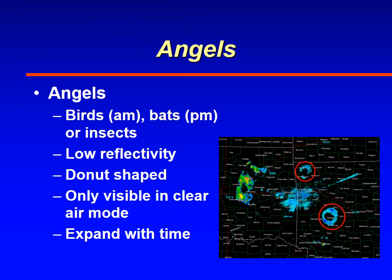Angels are a little different — these are circular echoes caused by birds and bats or insects. Bats happen at night, birds happen in the morning. You may also see them along a front where air converges and birds and bats take flight. These are usually low reflectivity and show as blue donut shapes. You'll only see angels in clear air mode since it detects very weak returns, and they expand over a period of time.